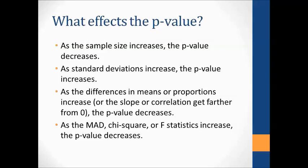In all of our tests, as sample size increases — as long as nothing else changes — the p-value decreases. When dealing with a quantitative response, the standard deviation or spread of the data affects the p-value: if data is more spread out, the p-value increases. As differences in means or proportions move farther apart, or as the slope or correlation gets farther from zero, the p-value decreases. The MAD, chi-squared, and F statistics all have similar properties: a value of zero means all means or proportions are the same, and as those statistics increase, the p-value decreases.